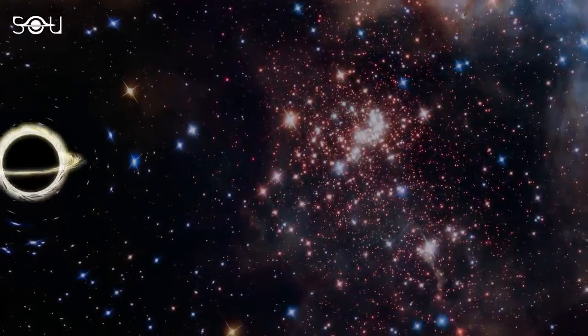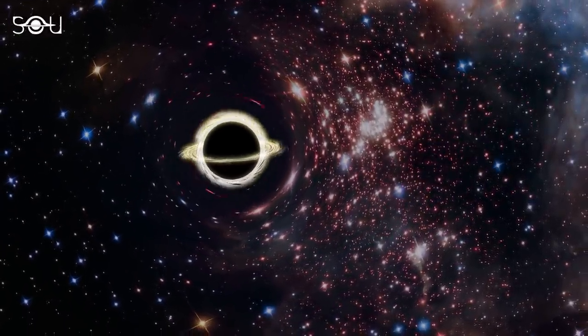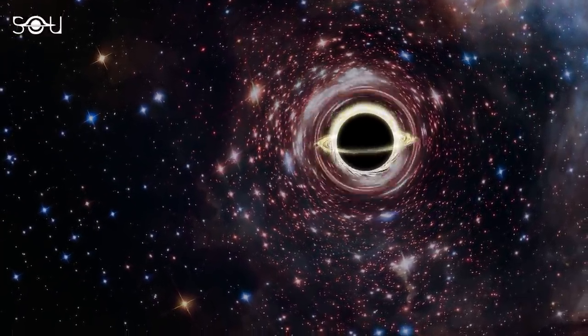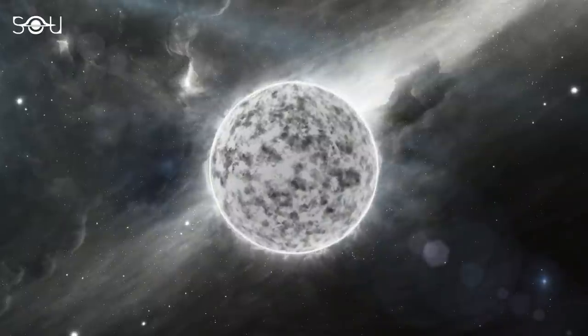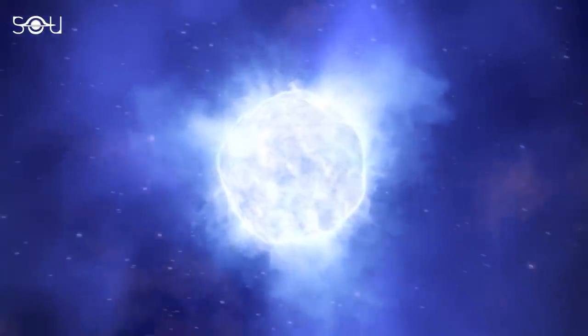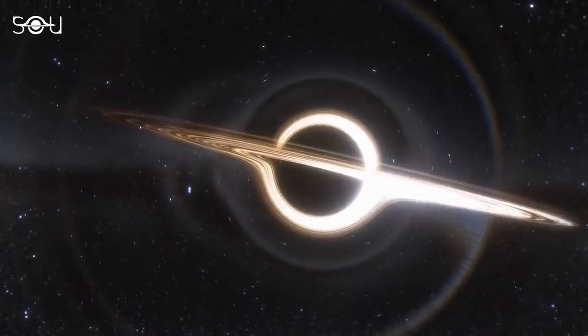So when something magnifies the light of a distant star, making it glow strangely bright, astronomers know there is probably a gravitational field of a white dwarf, a neutron star, or a black hole, and so on.